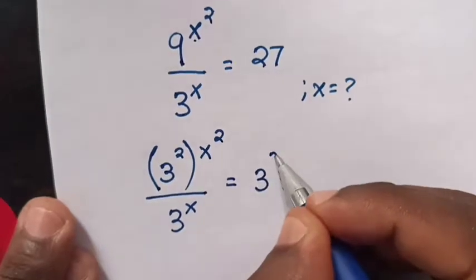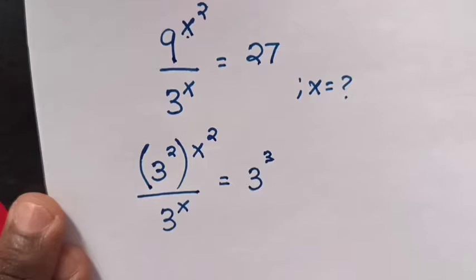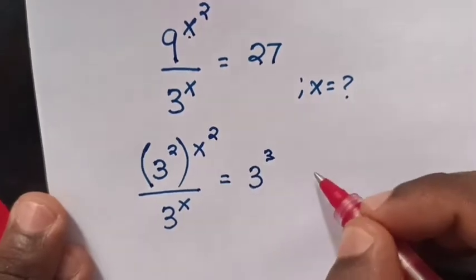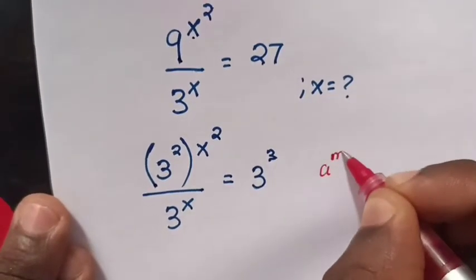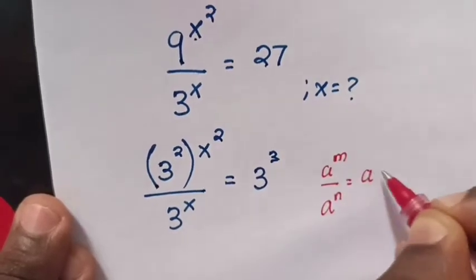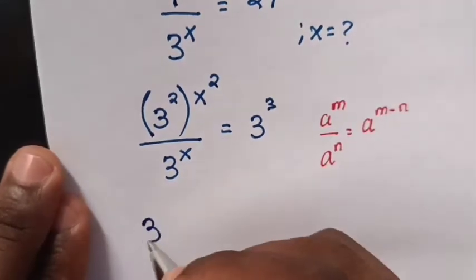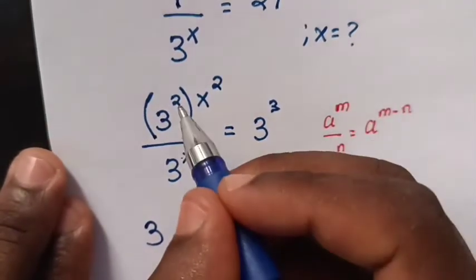27 is 3 power 3. Then we apply the exponential rule that a power m over a power n equals a power m minus n. So first from base 3,